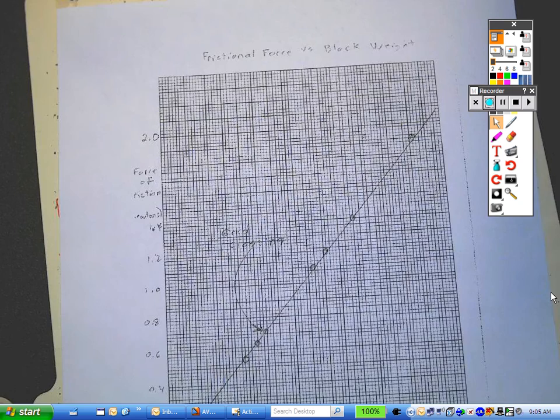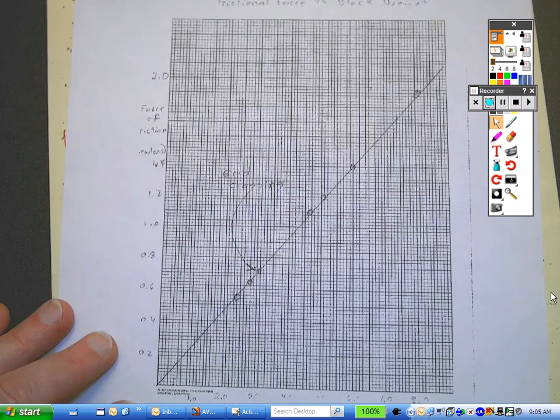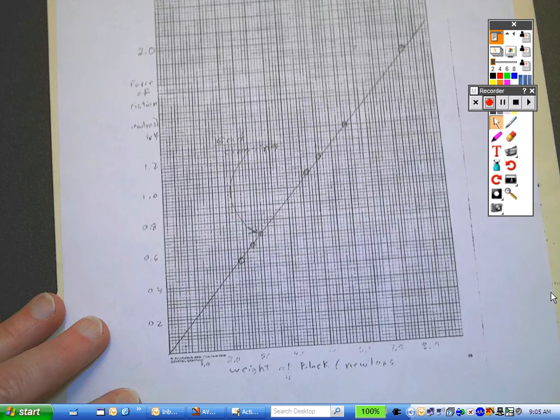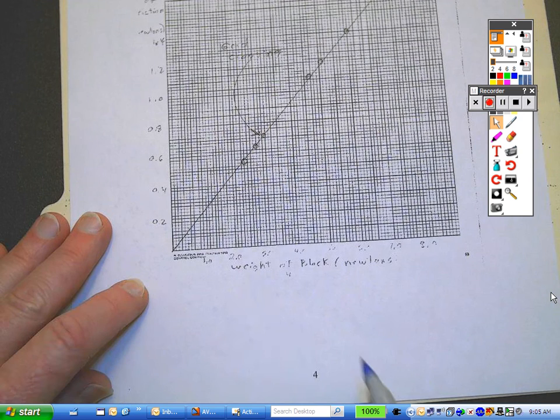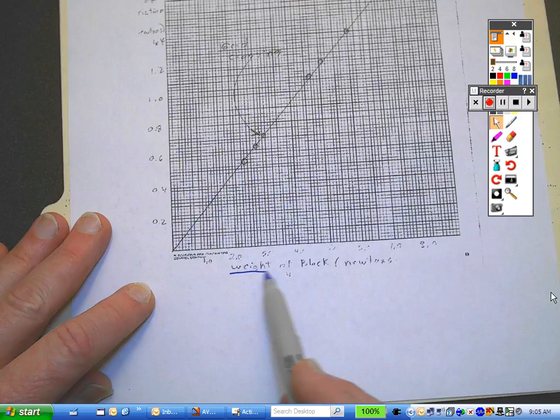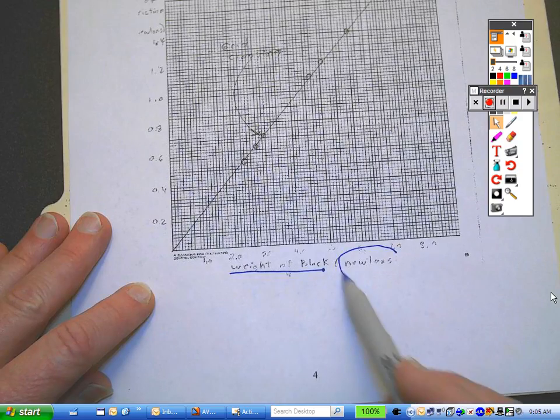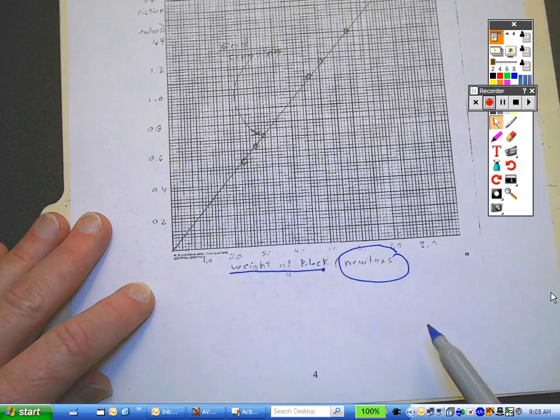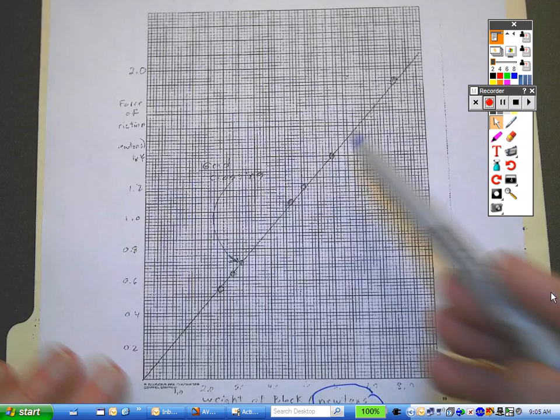Many times there is a graph. So you place the graph and it can be anywhere at the end of it. Remember when you have a graph, you need to label the axis. So for instance, I had the weight of the block and I put the units in parentheses for Newtons. Then I showed my data points here.